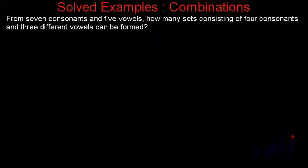Hi, so we have one more solid example based on combinations. Let's first read the problem statement. The problem statement says: from seven consonants and five vowels, how many sets consisting of four consonants and three different vowels can be formed?